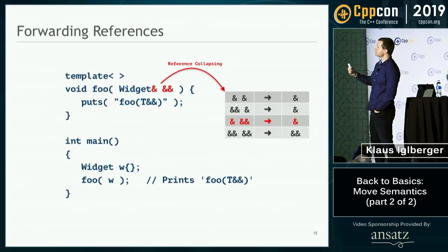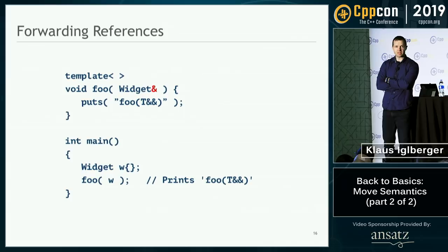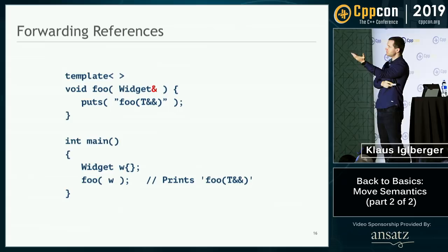In this case I end up with a single l-value reference — that's the reference collapsing rule. So finally, foo is instantiated as a function that takes an l-value reference, which is why it compiles: I can pass the widget w to the function, it's an l-value, this fits perfectly.